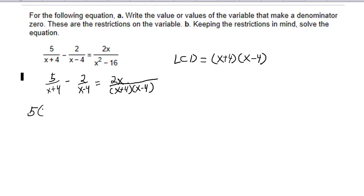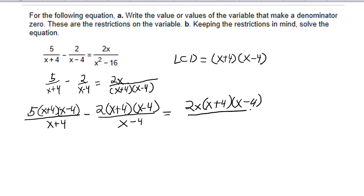I'll have 5 times x plus 4 times x minus 4 over x plus 4 because when you multiply a fraction by a whole number, which essentially is what this LCD is, that means you multiply the numerator. And we'll have 2 times x plus 4 times x minus 4 over x minus 4. And that's going to equal 2x times x plus 4 times x minus 4 over x plus 4 times x minus 4.